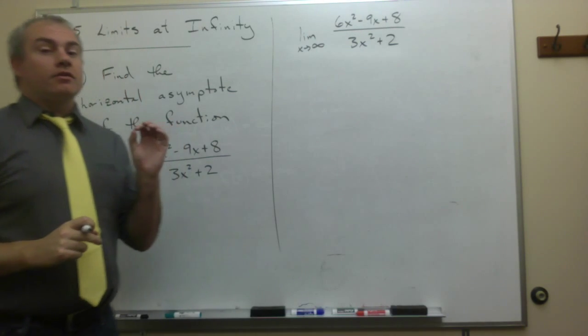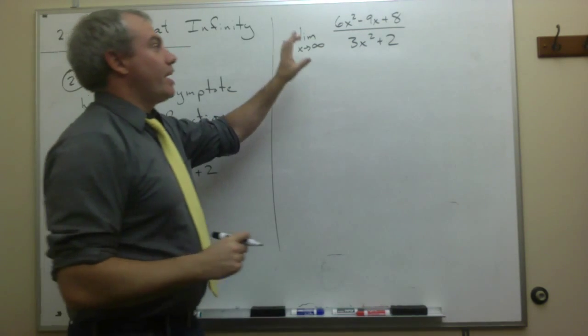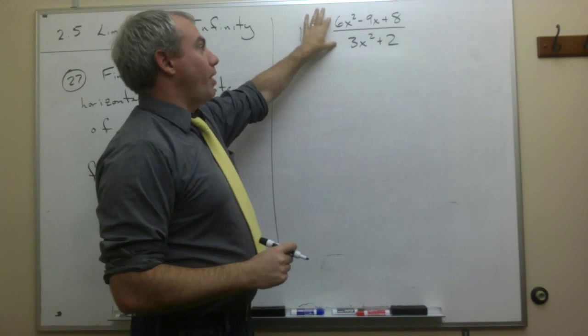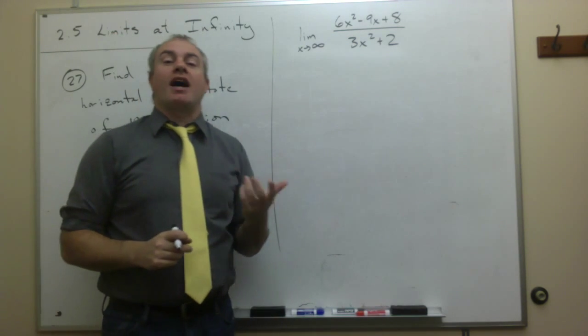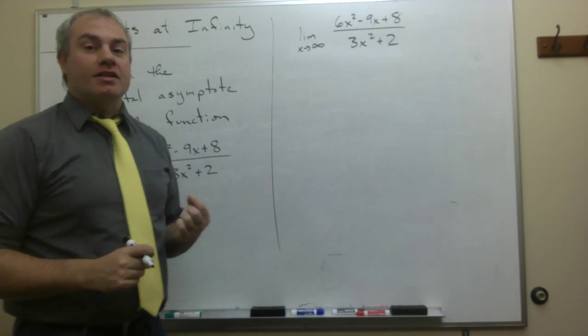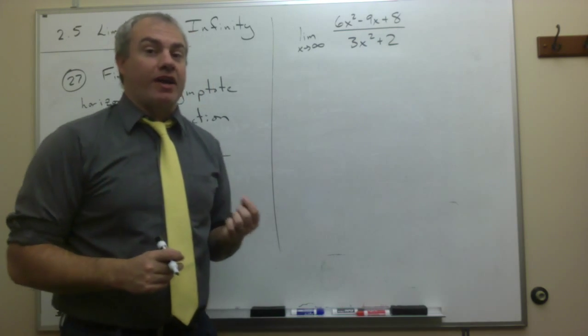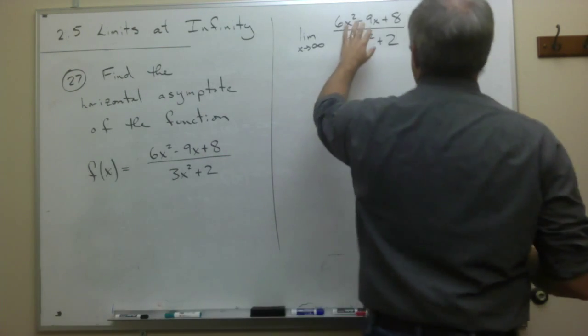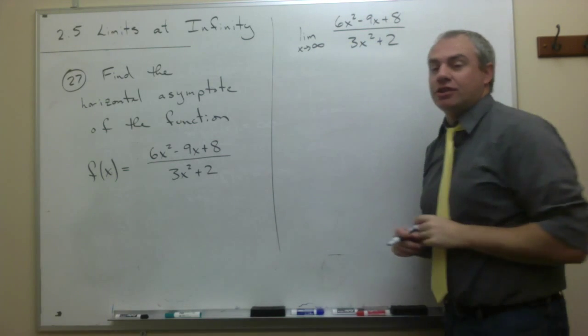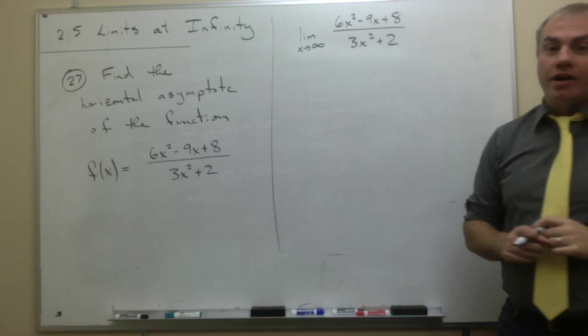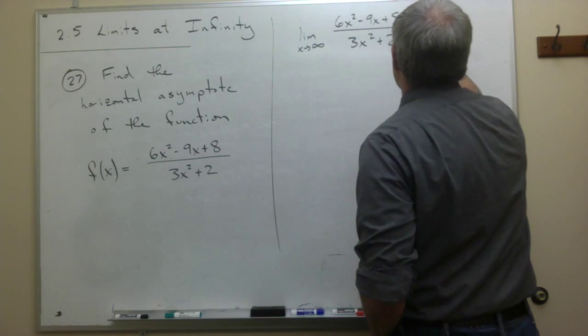What we want to do next is we want to look at the top and the bottom of that rational function, and we want to ask the question, what's the highest power of x? And in this case, the answer is the highest power of x is 2. So we want to divide the top and the bottom of this fraction by x squared. So let's go ahead and write that down.